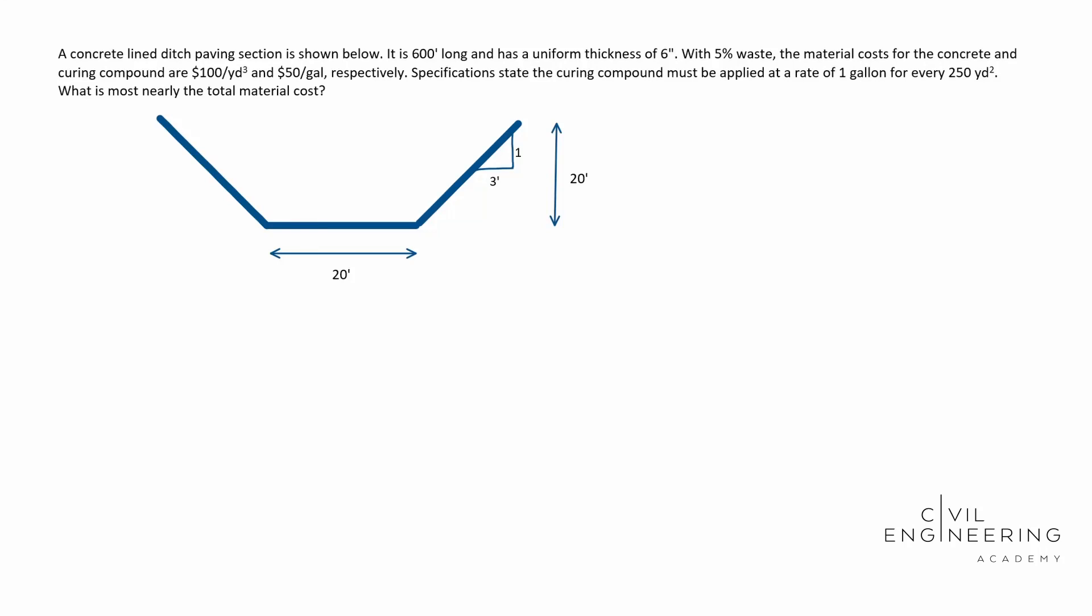Hey, what's going on everybody. Welcome back to Civil Engineering Academy. My name's Cody. Let's go ahead and get started. So today we have a project management problem. This is going to be a quantity takeoff method and basically we're trying to find the total cost for a concrete lined ditch paving section.